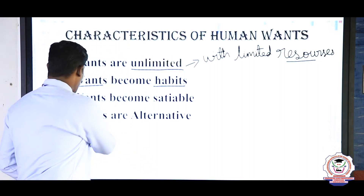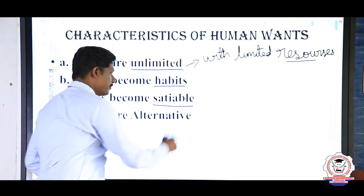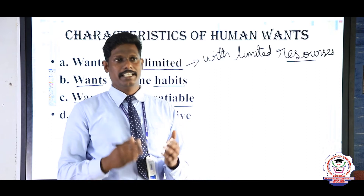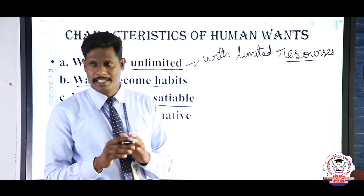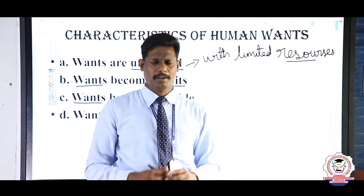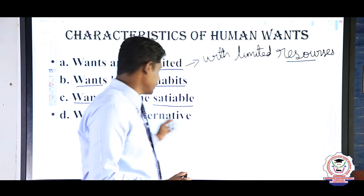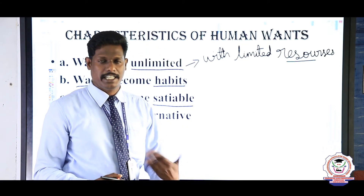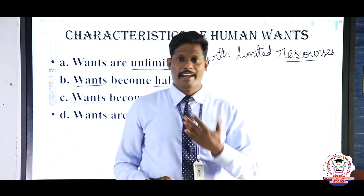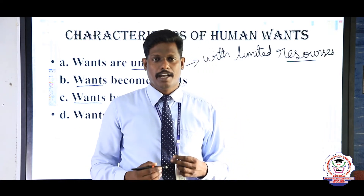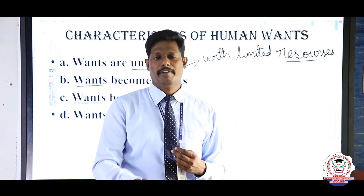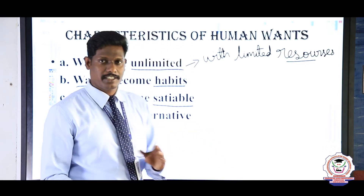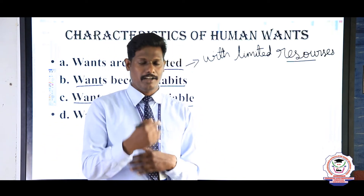Next: wants become satiable. Satiable means it is not satisfied at the moment — it is always changing. For example, if I am hungry I can eat food, but after some time I get hungry again. That is satiable — it is not satisfied permanently and is always changing.